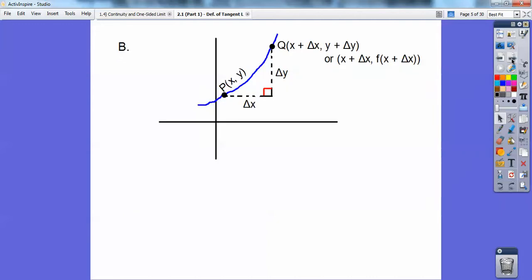Say I wanted to find a tangent line anywhere right there. Let's pretend I had a tangent line going right up through here, and I want to know the slope of that tangent line at a specific point right there.